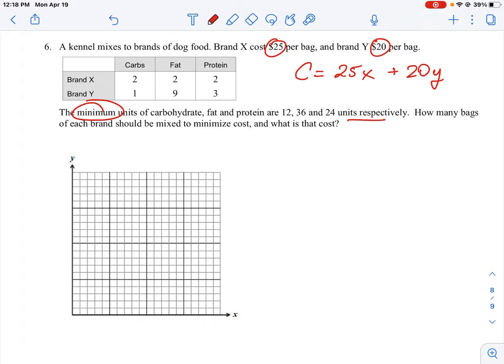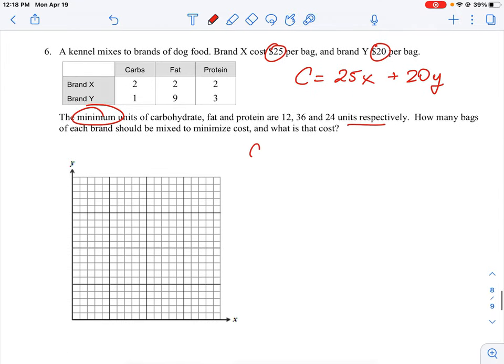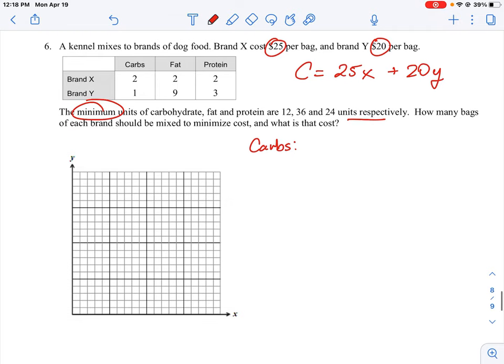So what does that statement mean? The minimum units of carbohydrates. That means you have to have at least that much or more. That's what the statement of a minimum means, that you have to meet a certain amount or more. So if we were to think about it here, what we could say is for the carbs, for that nutrient, we are going to have two units times the number of bags for Brand X, plus one unit times the number of bags for Brand Y. So that's just simply 2X plus Y. But if it says the minimum units need to be 12 in this case, that's the unit for carbs, that means we want to have at least 12 or more. So our equation can be stated as greater than or equal to 12.